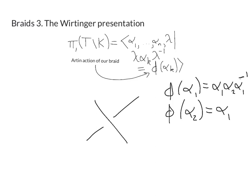So the presentation we get is it's got two generators α₁ α₂, oh sorry three generators α₁ α₂ λ, and two relations: λ α₁ λ⁻¹ equals α₁ α₂ α₁⁻¹ and λ α₂ λ⁻¹ equals α₁.